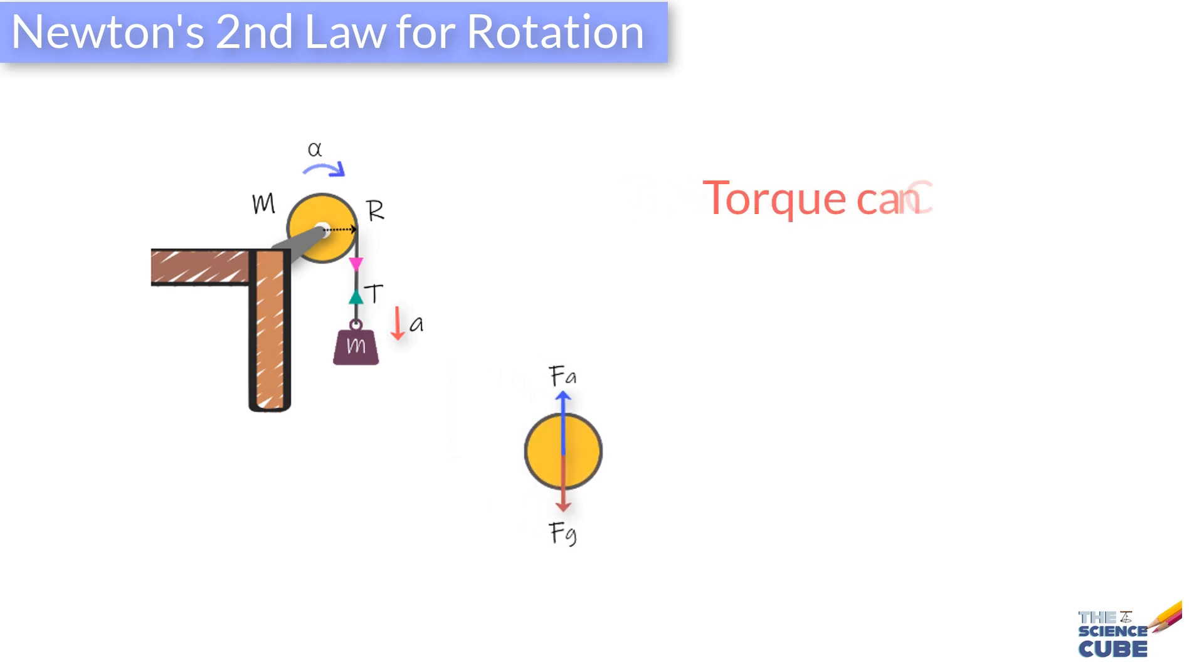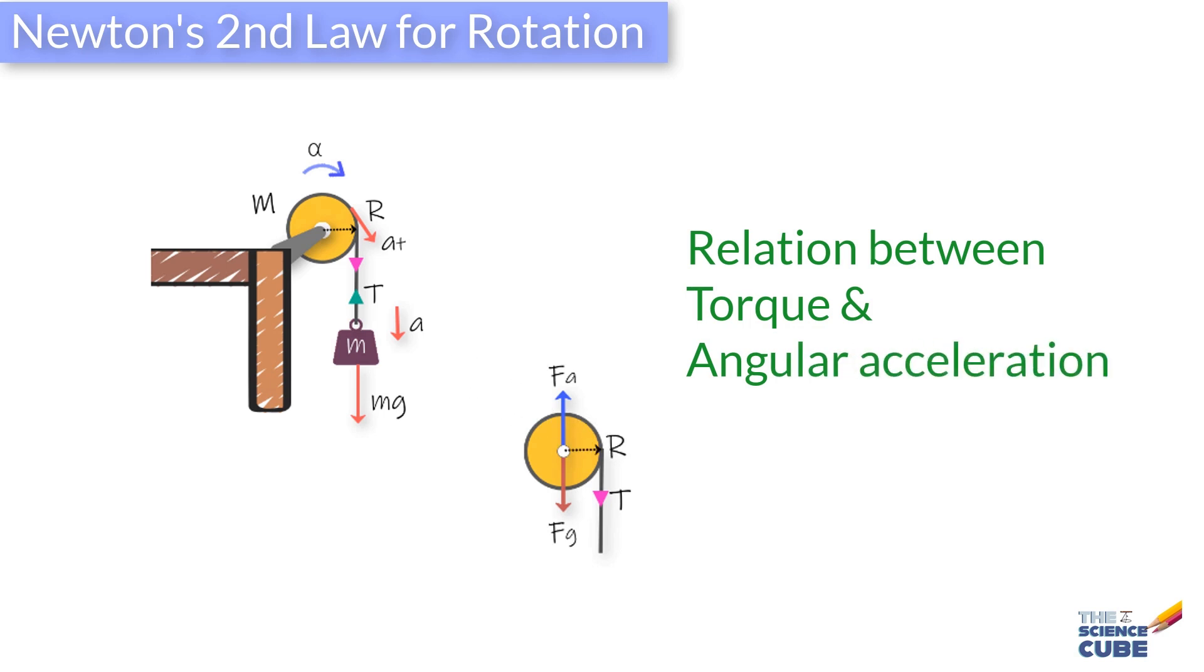Now, you know that torque can cause a body to rotate, so the next concept you need to grasp is how we can relate the torque on a body to the angular acceleration that is caused by this torque about the axis of rotation.